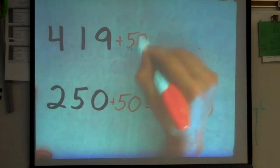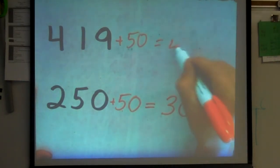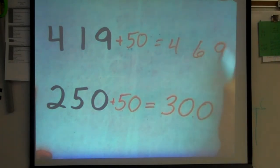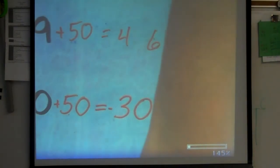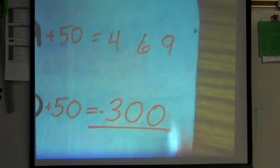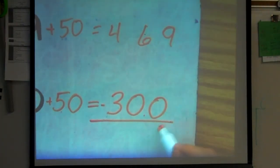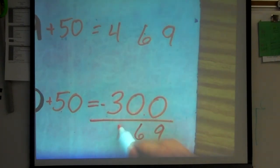I ask them, how did they get from 250 to 300? They tell me I added 50. So, I do the exact same rule to the top. 250 plus 50 is 300. 419 plus 50 gives me a total of 469.